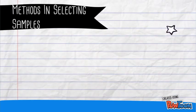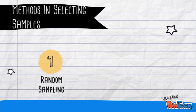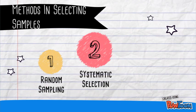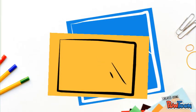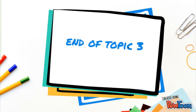There are a few methods in selecting samples. The first is random sampling, in which each item in the population has an equal chance of selection. The second is systematic selection, also called interval sampling. And the last is haphazard sampling, which is selection of a sample without a specific reason or structured technique. That concludes Topic 3. Thank you so much, Sir Mooklis and friends, for lending your ears.